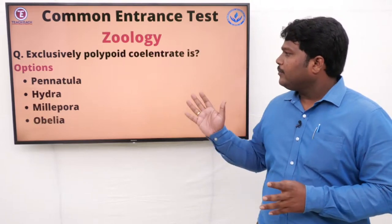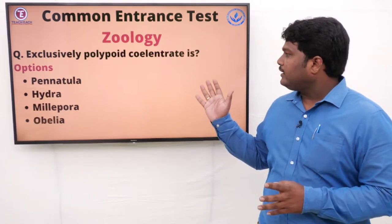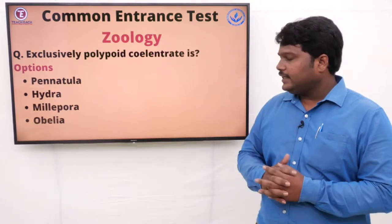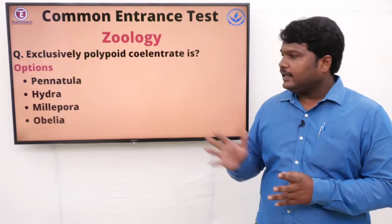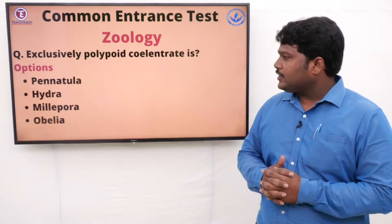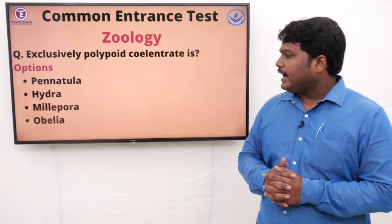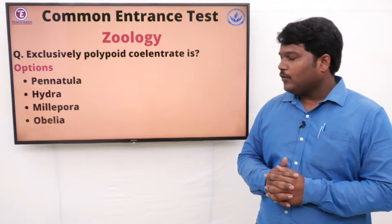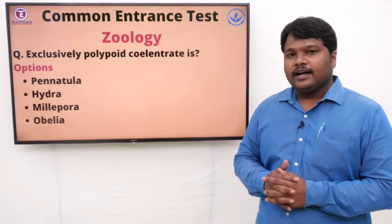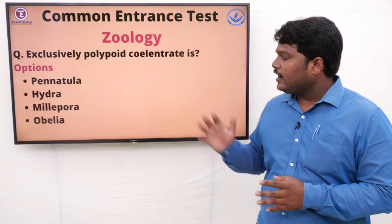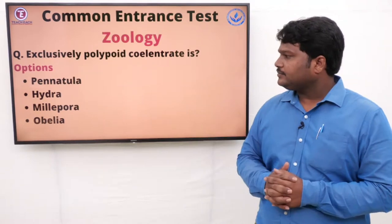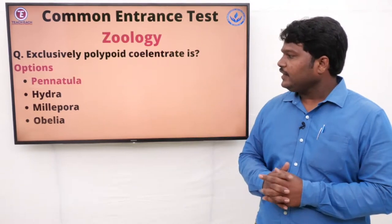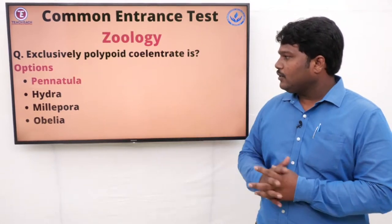Question 11: Exclusively polypoid colony is. Options: A) Pennatula, B) Hydra, C) Millepora, D) Obelia. The right option is Pennatula.